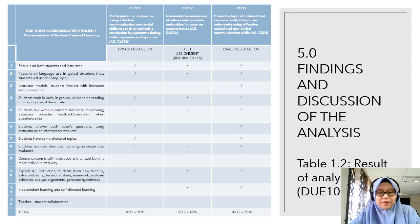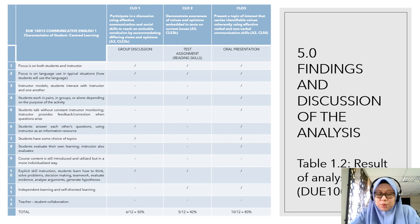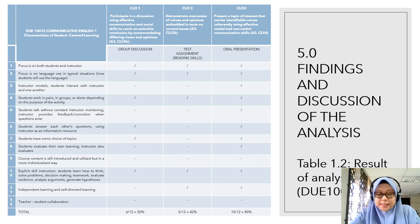Moving on to findings and discussions of the analysis. Using the checklist in the previous table, the criteria of student-centered learning were applied, and the results of document analysis are presented in Table 1.2, 1.3, and 1.4. Table 1.2 shows results of analysis for DUE 10012, Communicative English 1. For this table, for CLO1 Group Discussion and CLO2 Test and Assignment Assessment, it was found that only 50% and 42% of SCL characteristics respectively were met. However, for CLO3 oral presentation, a notable score of 83% was evident, as most of the characteristics of SCL were met for this assessment.